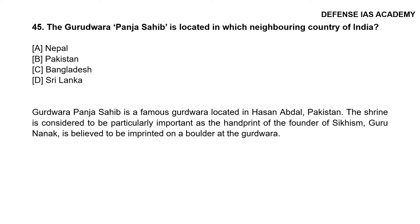Question 45: The Gurudwara Panja Sahib is located in which neighboring country of India? The answer is option B, Pakistan. Gurudwara Panja Sahib is a famous Gurudwara located in Hassan Abdal, Pakistan. The shrine is particularly important as the handprint of the founder of Sikhism, Guru Nanak, is believed to be imprinted on a boulder at the Gurudwara.